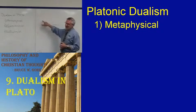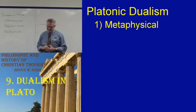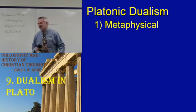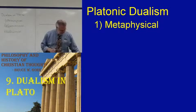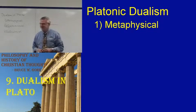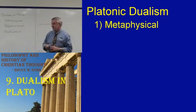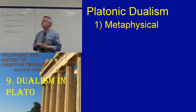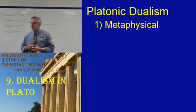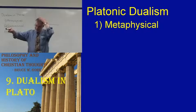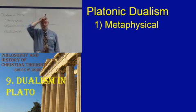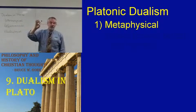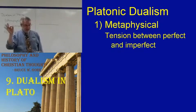Wherein is the dualism in Plato's metaphysics? Humans exist in this world where we only see shadows of reality. There's constantly a moral goal of trying to see the form of what is real. For Plato, there is a tension between the perfect and the imperfect.